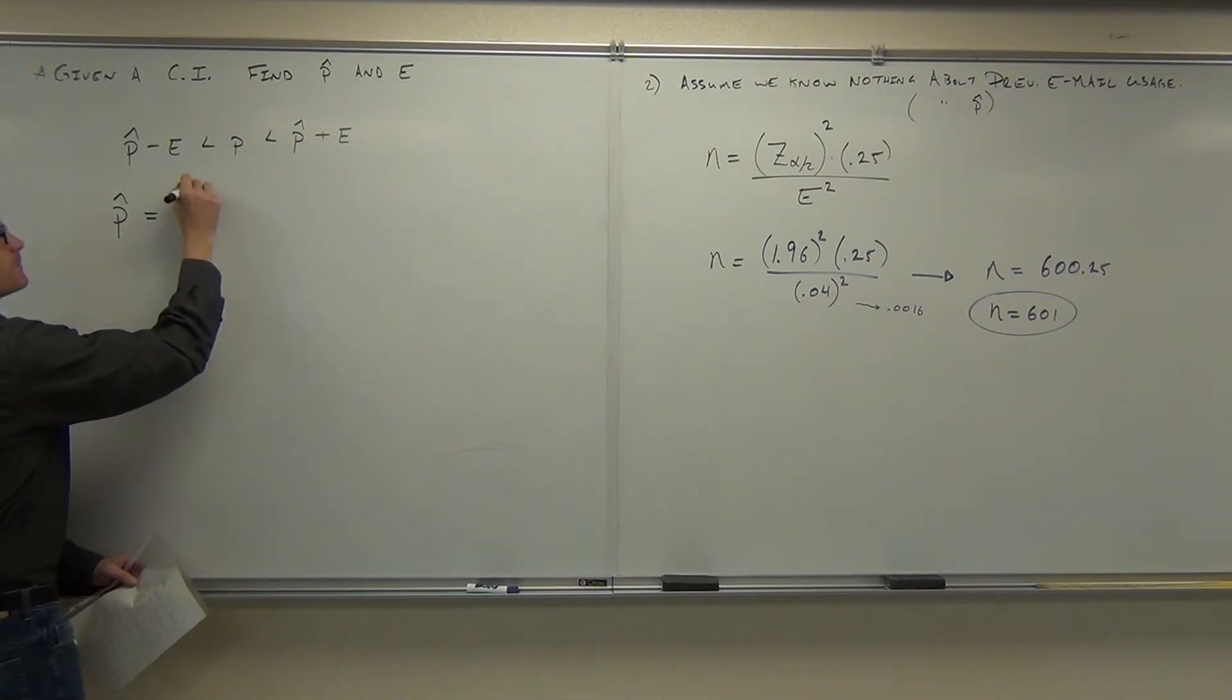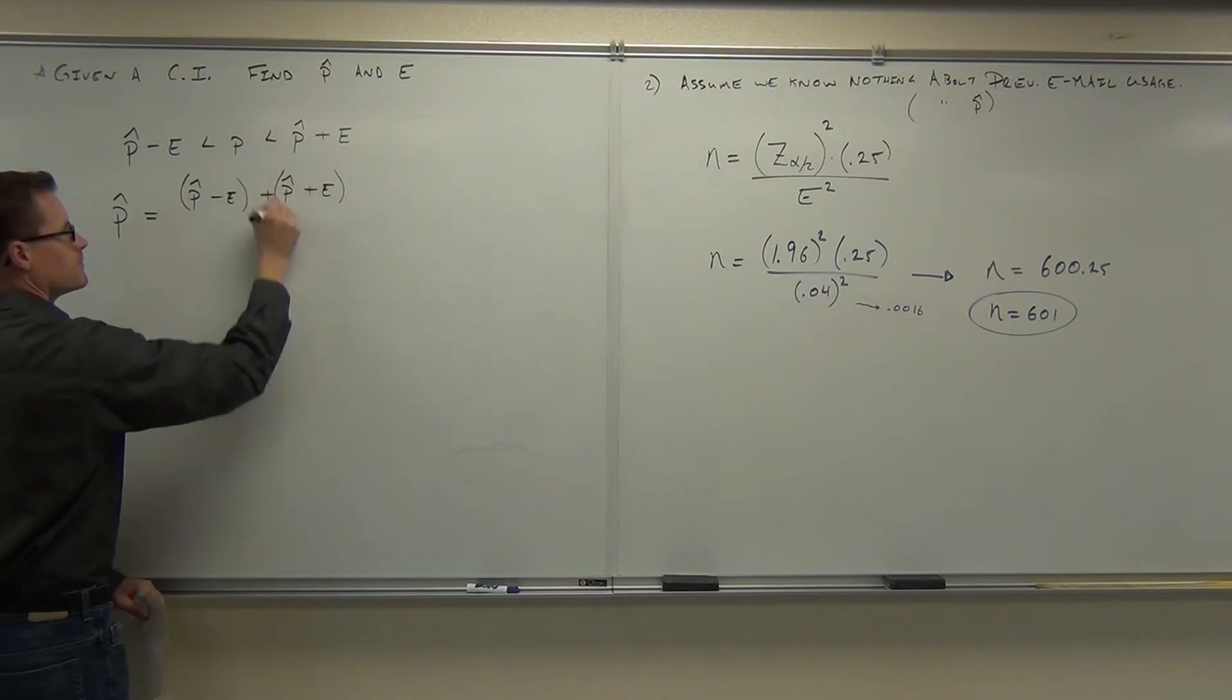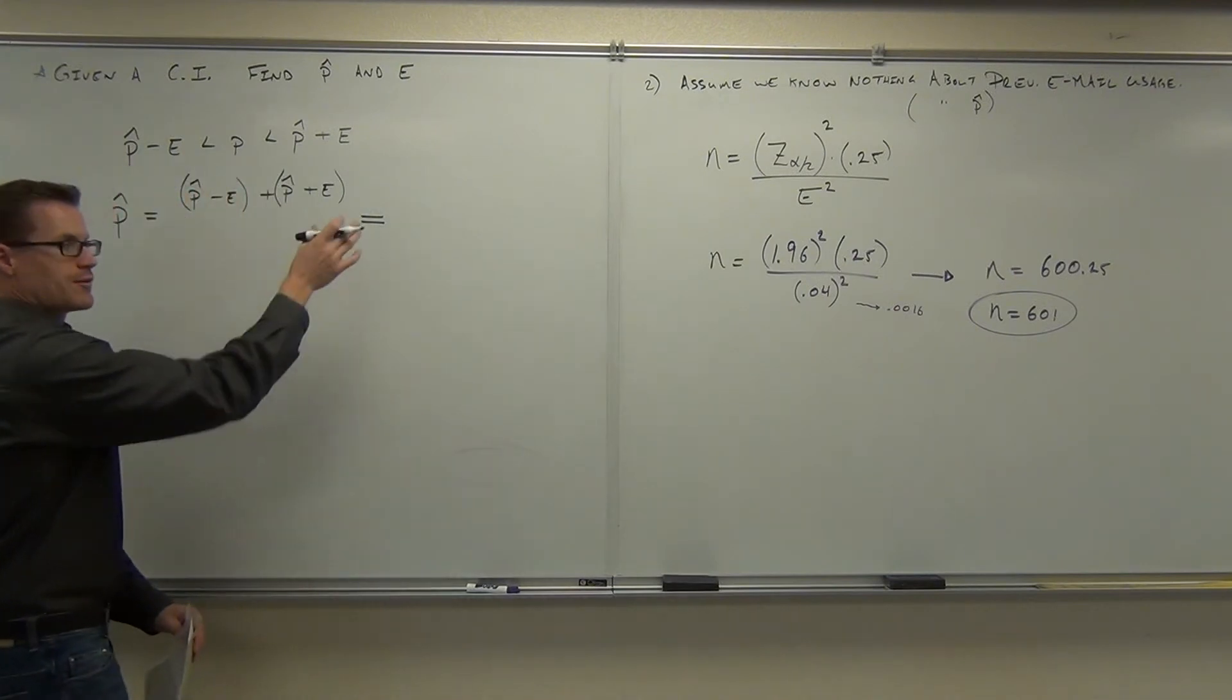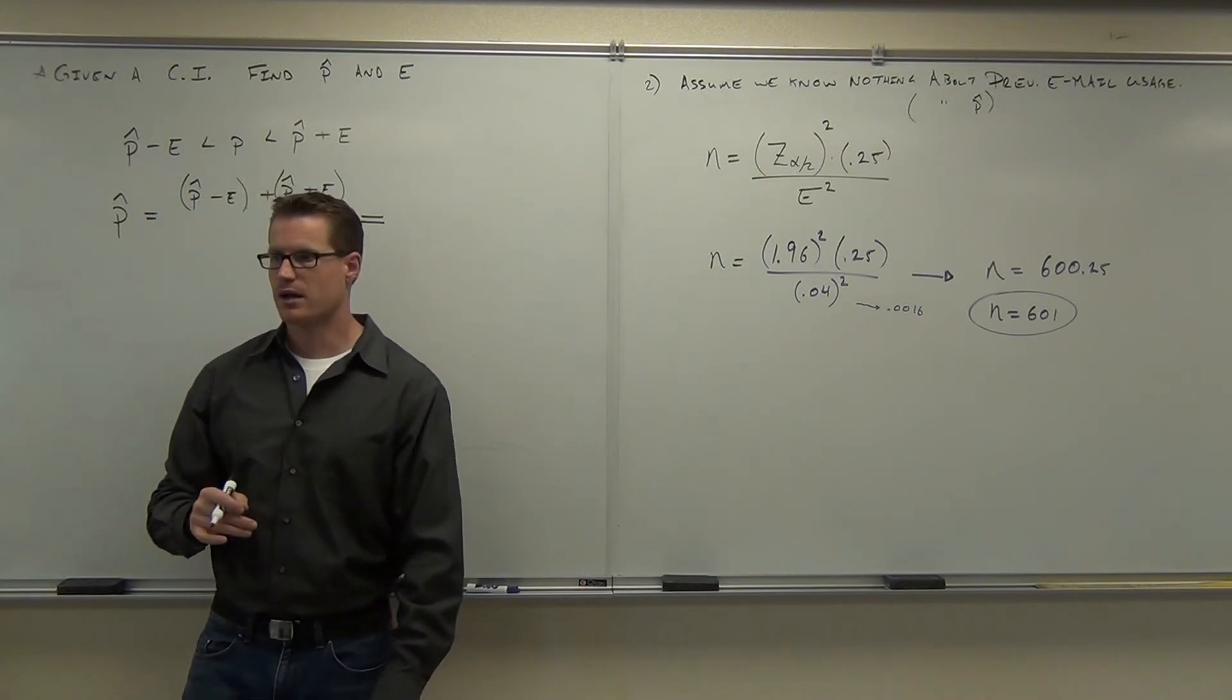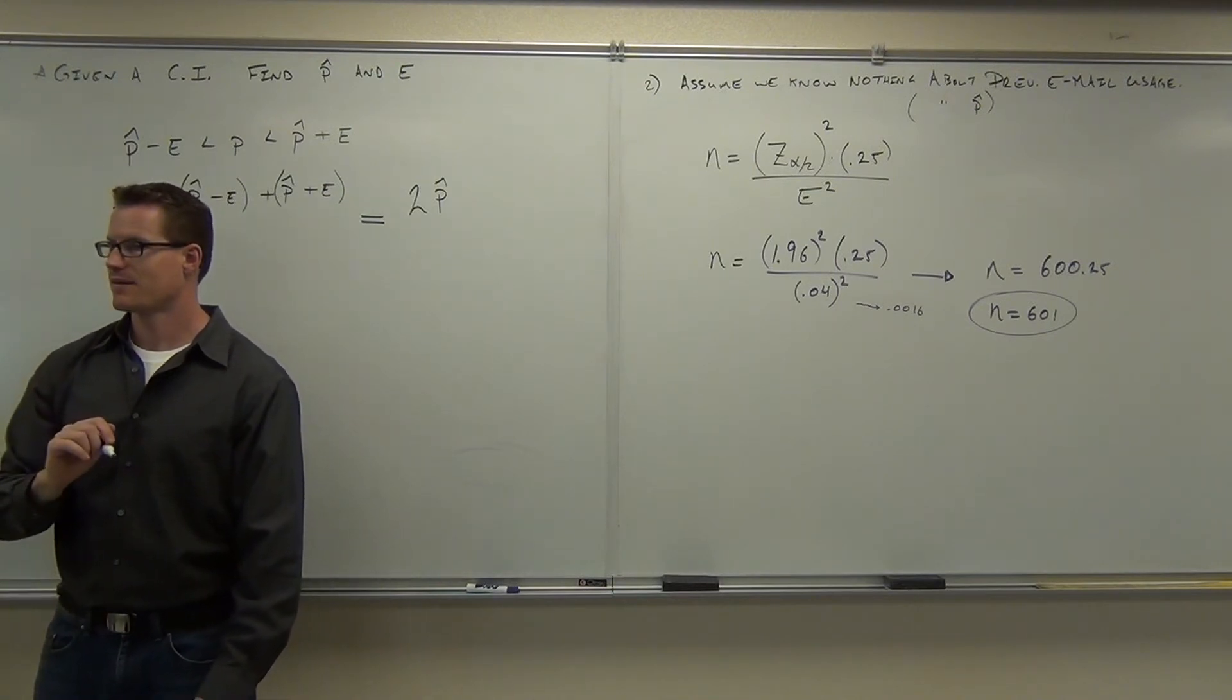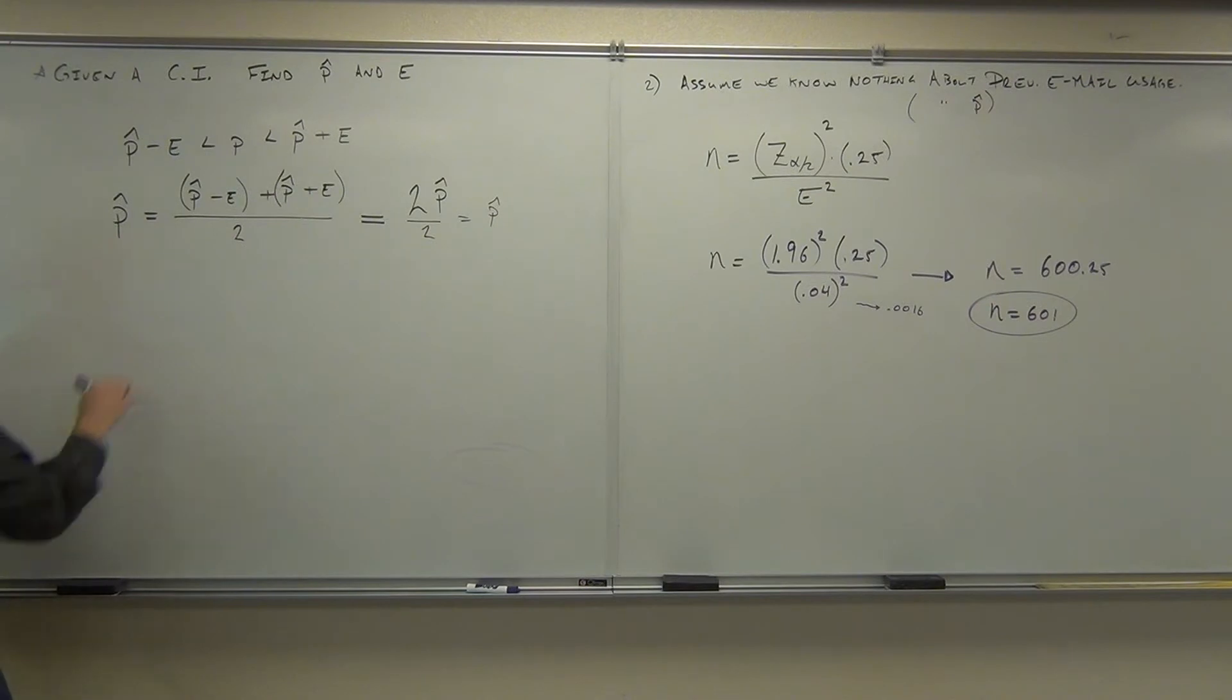Here's how you can do it. If I take a look at these two numbers and I'm looking for p-hat, if I add them together, do you see what's going to happen to your e's? They cancel. And what are you going to be left with? Two p-hat. Do you see the two p-hats? Yes. How do I make that into one p-hat? Divide by two. That would equal p-hat. So if I take this and divide by two, that's going to equal p-hat. Do you follow?